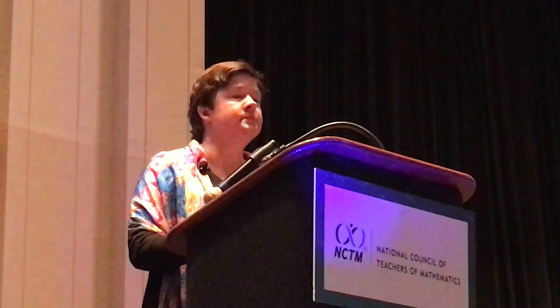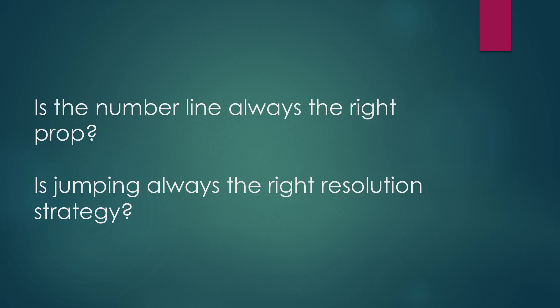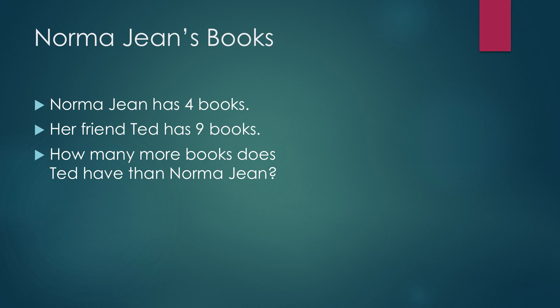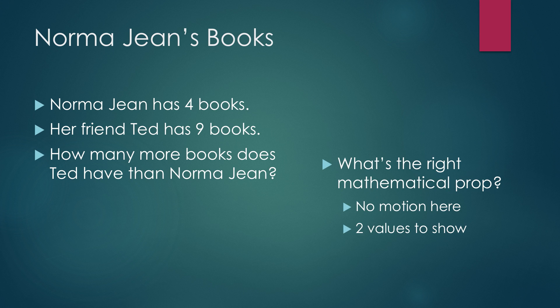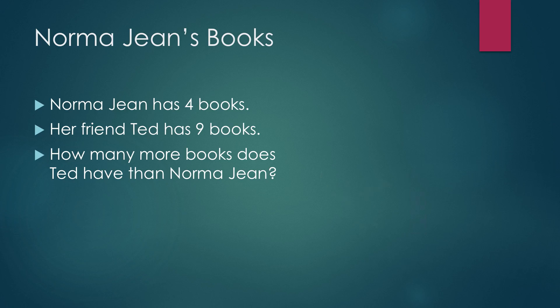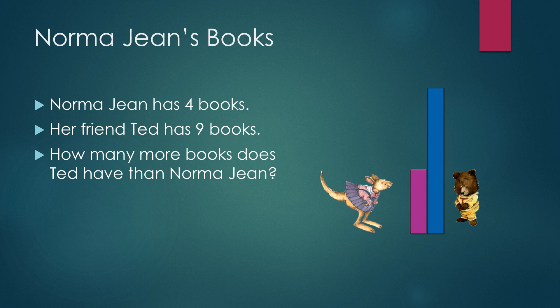Is the number line always the right prop? No. Is jumping along the number line — or motion at all — always the right strategy? No. Depends on the problem. So if we think about Norma Jean and her friend Ted in a different problem, now we're looking at the books that they have. Norma Jean has four, Ted has nine. I don't need a prop that will let me show motion here, but seeing those two values is a really big deal. So I want to choose a model that will let me do that. In this case, I'm going to pick Cuisenaire rods — my purple rod is Norma Jean's four, my blue rod is Ted's nine — and my mathematical question, my resolution to the story: what fills in the gap? What's the piece that comes in the middle and shows us that in fact Ted has five more books? It's that yellow rod.